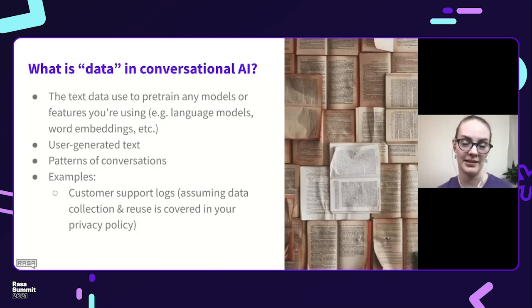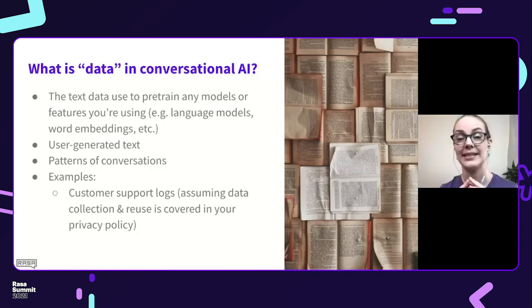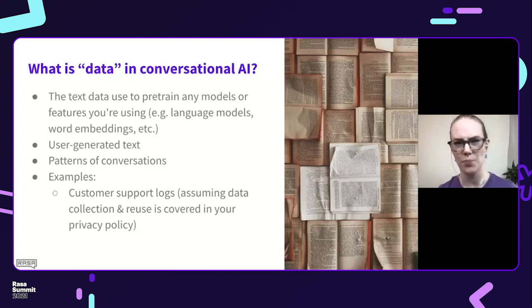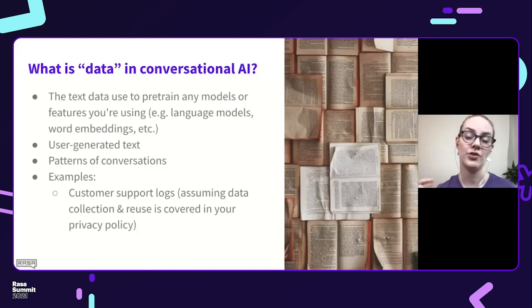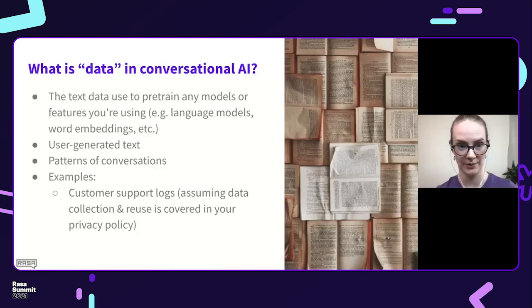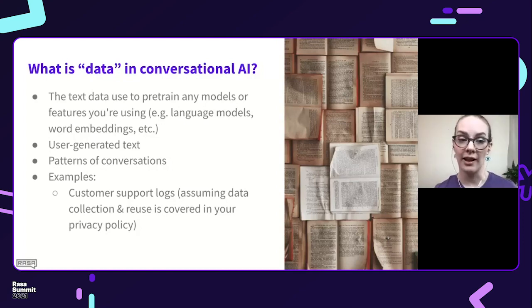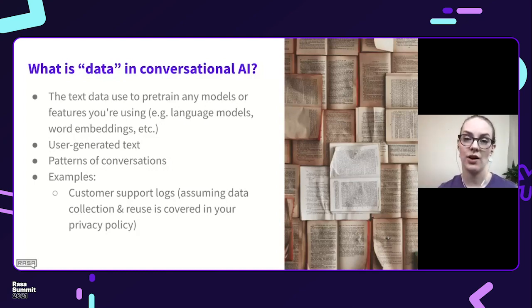When I say 'data' in this context, what do I mean? The data in conversational AI is almost always text data. The majority of it is going to be in pre-training models — you will probably not touch this when developing your first assistant, but this is the corpus used to pre-train things like language models and word embeddings, the data used to learn features that turn text into numbers. What's more relevant is user-generated text — things that users have said or written to a system — and patterns of conversation: what order have things happened in the past?